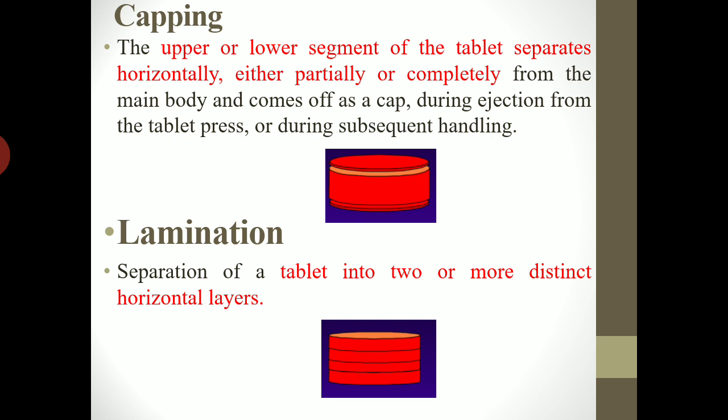This defect can also occur during subsequent handling — that means during packaging, during evaluation tests, or even during use. Next is lamination: separation of the tablet into two or more distinct horizontal layers is called lamination. As the diagram shows, there will be formation of different horizontal layers in the tablet.